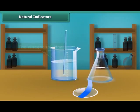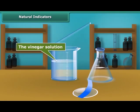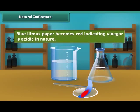Again, dip a clean stirrer into the vinegar solution and put one drop on blue litmus paper. Blue litmus paper becomes red, indicating vinegar is acidic in nature.